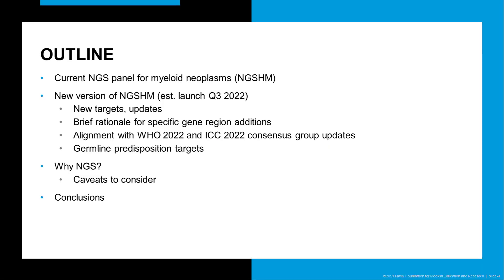I have no disclosures. The outline I will follow, as shown here: I will recap our current NGS panel offering for myeloid neoplasms — the test ID or mnemonic is NGSHM. I will then go over the new version of NGSHM, which is an update rather than a complete overhaul. As part of this, I'll discuss the new targets and some of the new aspects of the chemistry, and a brief rationale for why we have introduced new genetic regions or targets.